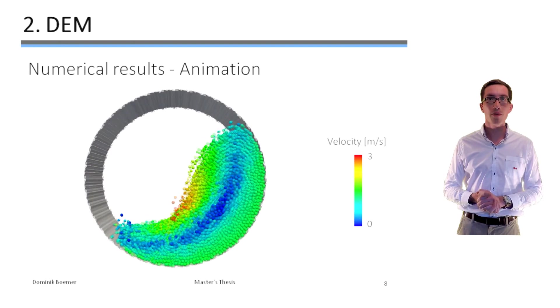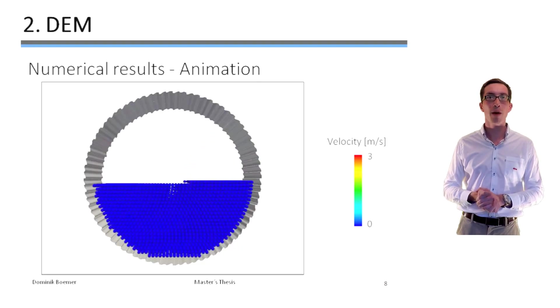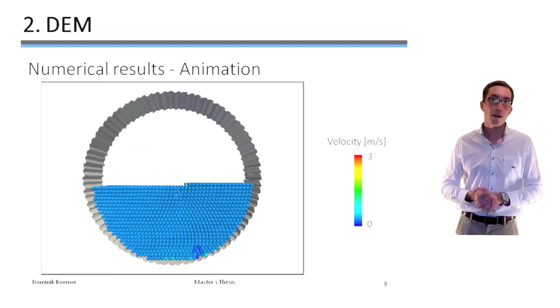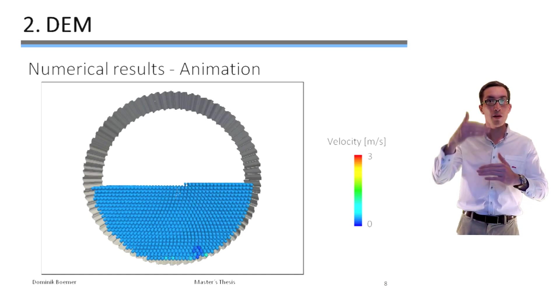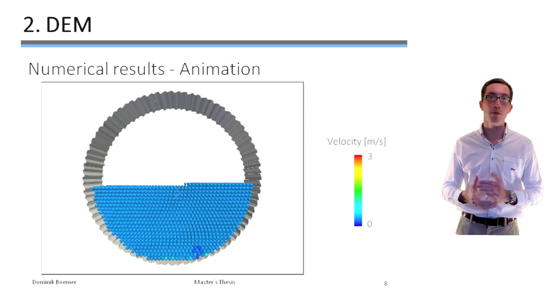So besides this charge motion, the correlation is also very good for the power draw since the error between the predicted power draw and the real power draw remains below 5%, which means that the power can also be predicted.